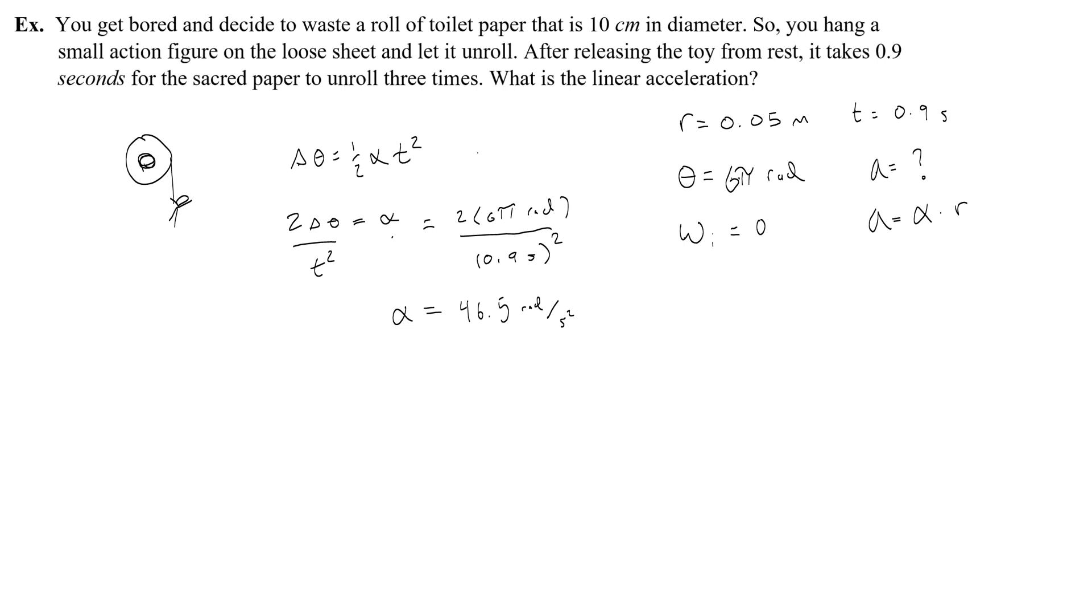Now to find the linear acceleration, I simply take that angular acceleration and multiply it by the radius. So 46.5 radians per second squared times 0.05 meters, which gives me 2.325 meters per second squared. Now you have found the linear acceleration.